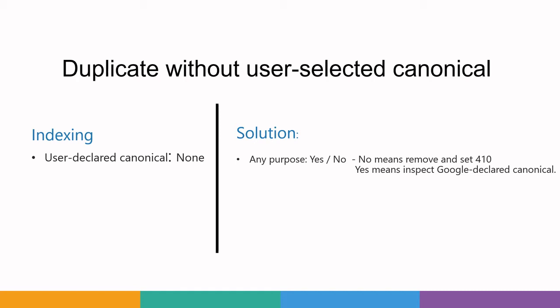Sometimes if the user forgets to declare the canonical URL, you may get the error 'duplicate without user selected canonical.' While inspecting this page in indexing, you will find the user declared canonical listed as none — meaning the user has not declared any canonical URL. The solution for this is to declare your canonical URL.